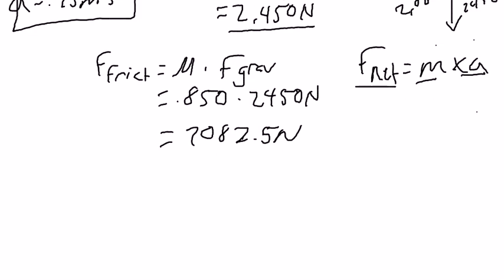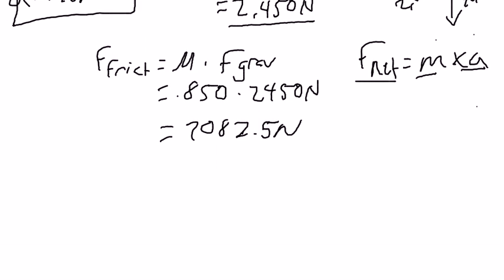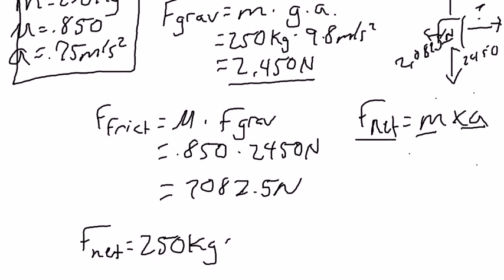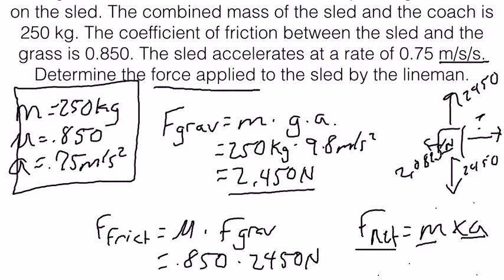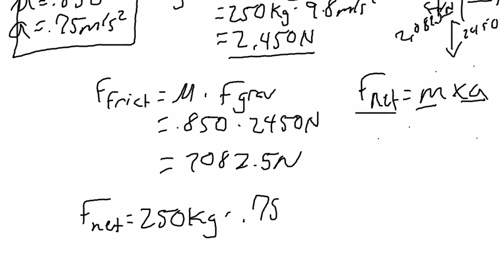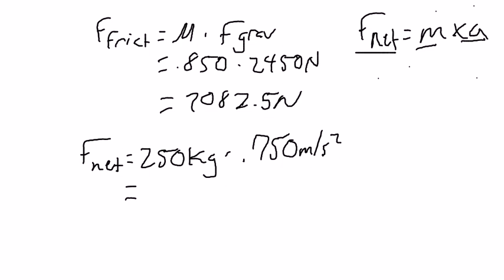So, our mass in our problem is 250 kilograms. F net is equal to 250 kilograms times the acceleration, which is 0.750 meters per second squared. When you multiply 250 into 0.75, you will get 187.5 newtons. And that equals F net.